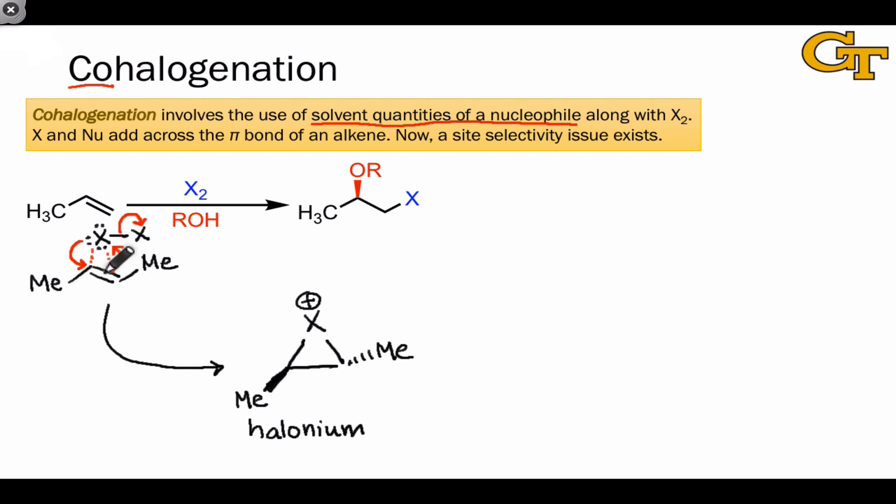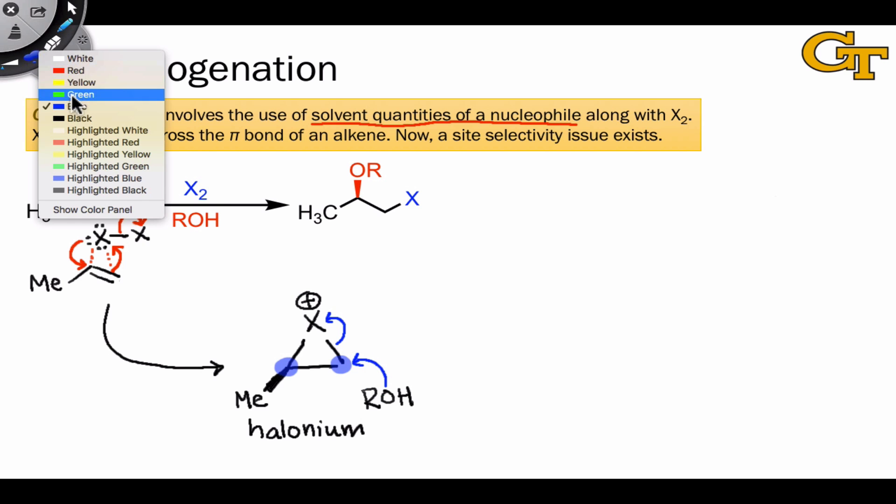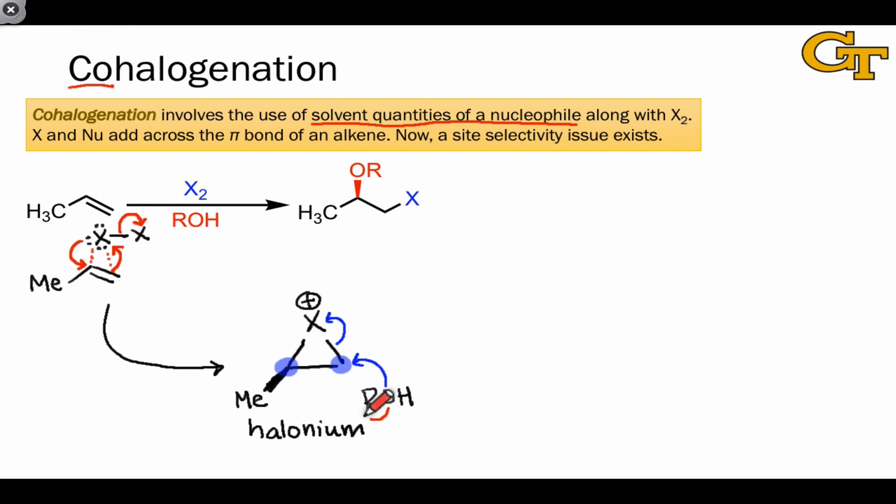Electrophilic addition of X to the alkene gives a halonium ion, but there is a difference between this substrate and the one we looked at on the last slide. Now there's a site selectivity issue since the two carbons of the alkene are not equivalent. This means the two carbons within the halonium ion are not equivalent, and we face a question as to which carbon the nucleophile attacks, the less substituted or more substituted carbon.